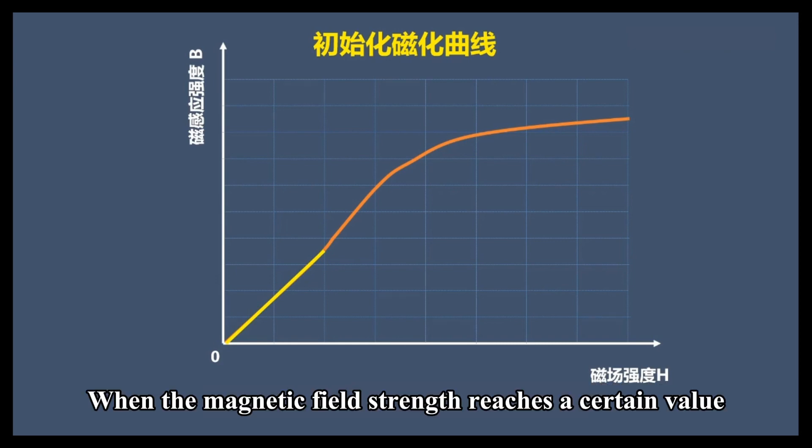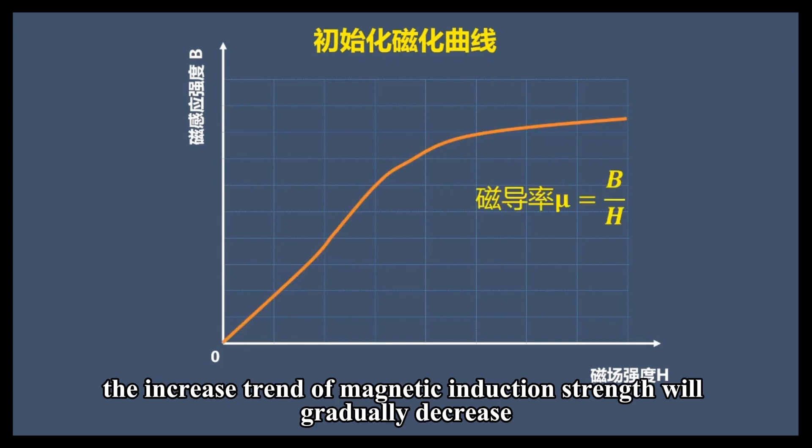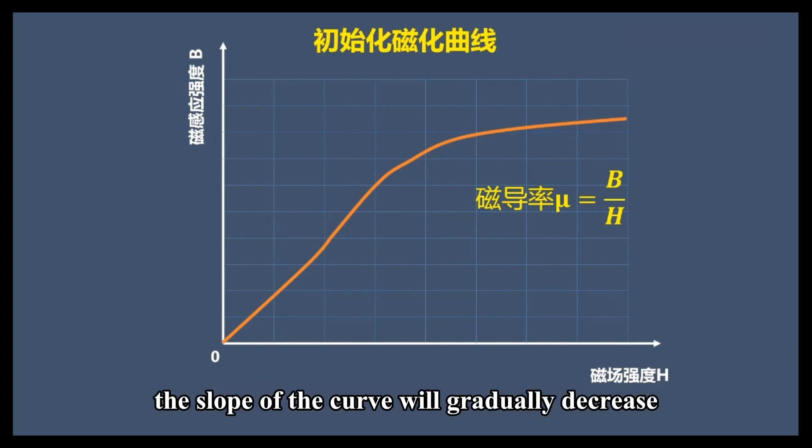When the magnetic field strength reaches a certain value, the increased trend of magnetic induction strength will gradually decrease, that is, the slope of the curve will gradually decrease.